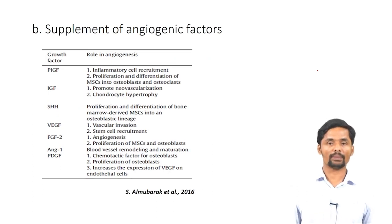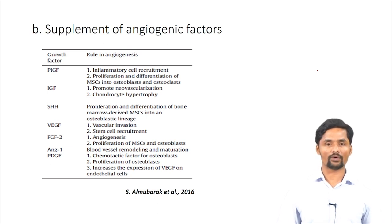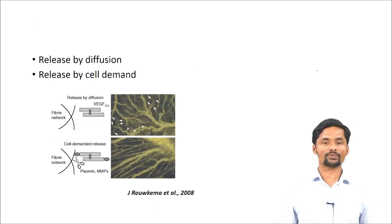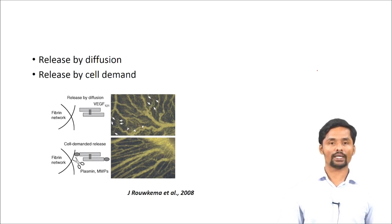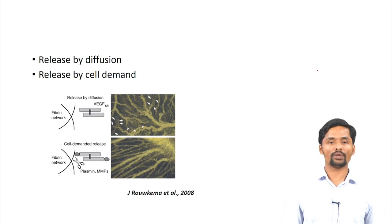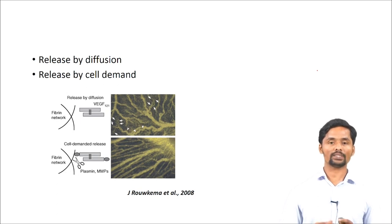The second approach is supplementation of angiogenic factors. By supplying growth factors involved in angiogenesis, we can achieve vascularization in tissue engineering scaffolds. There are two ways to supply these growth factors: release by diffusion, which is a direct method, and release by cell demand, which is an indirect method. In the release-by-diffusion method, we supply growth factors directly involved in angiogenesis such as VEGF, but we do not know the exact amount needed, which leads to unhealthy vessel formation.